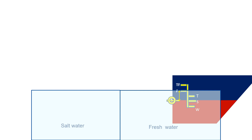We also have something called dock water allowance, or DWA, which explores the relationship between sea water and dock water. Dock water can have different density values, so depending on whether the density is more or less than sea water, the ship will rise or sink accordingly when moving between salt water and dock water. Fresh water allowance explores the relationship between salt water and fresh water, whereas dock water allowance explores the relationship between dock water and sea water.